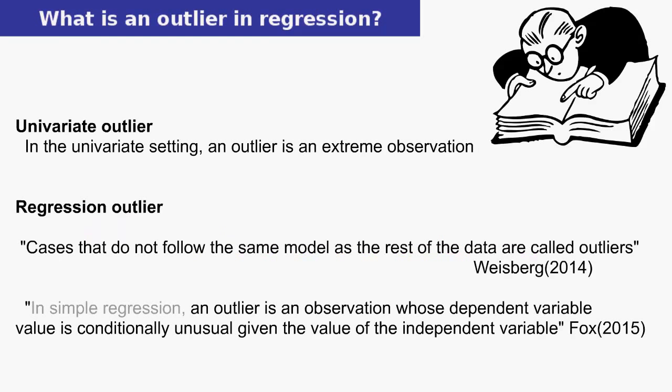We make the distinction between a univariate outlier and a regression outlier. Univariate outliers are taught early on in an introductory stats course. For continuous variables, they may be identified from univariate plots such as a box plot or histogram. A regression outlier is identified with respect to a model — you need to fit a model first before you can begin to identify outliers.